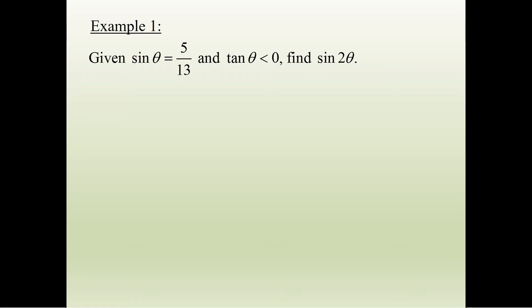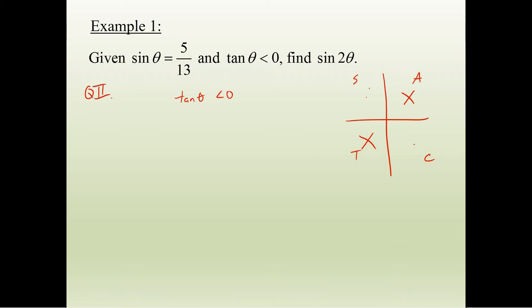Let's do an example. Given sine theta equals 5/13 and tangent theta is less than 0, find sine of 2 theta. Since tan theta is less than 0, tangent is not positive. Using 'all students take calculus,' tangent is positive in quadrants 1 and 3. Since sine is positive only in quadrant 2, we know we're in quadrant 2.